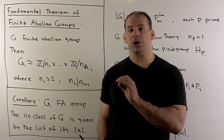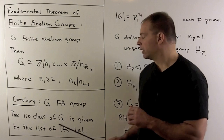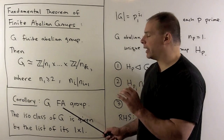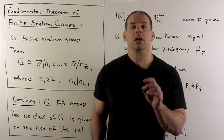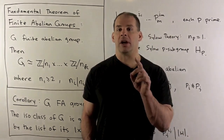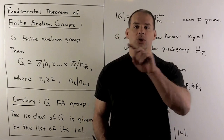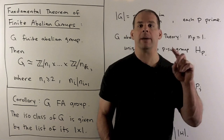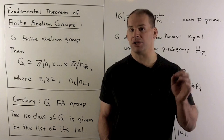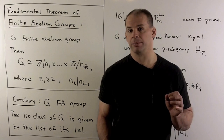We note this doesn't hold in general. There are going to be non-abelian finite groups whose list of orders of elements agree, but they're not isomorphic.